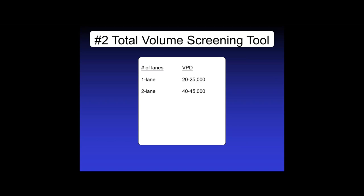Let's take a look at screening tool number two. If you look at the total volume of vehicles into an existing intersection, and it's less than 20,000 vehicles per day, chances are quite good a one-lane modern roundabout would work there. If you don't mind congestion now or in the future, even 25,000 vehicles per day would suffice for a one-lane roundabout. If you have a higher volume, we have a question that came in.